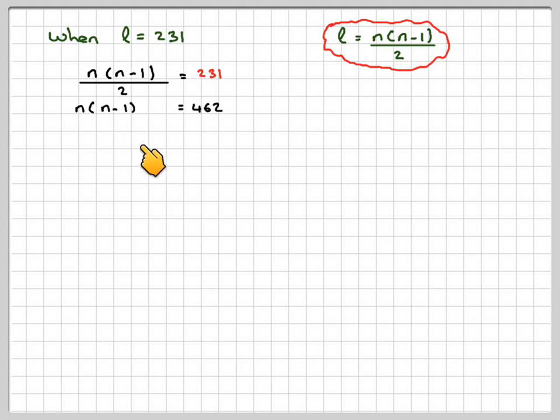So multiplying by 2, we get N times N minus 1 equals 462. This is a quadratic. So expanding the bracket, N squared minus N, subtracting 462, you get N squared minus N minus 462 equals 0.